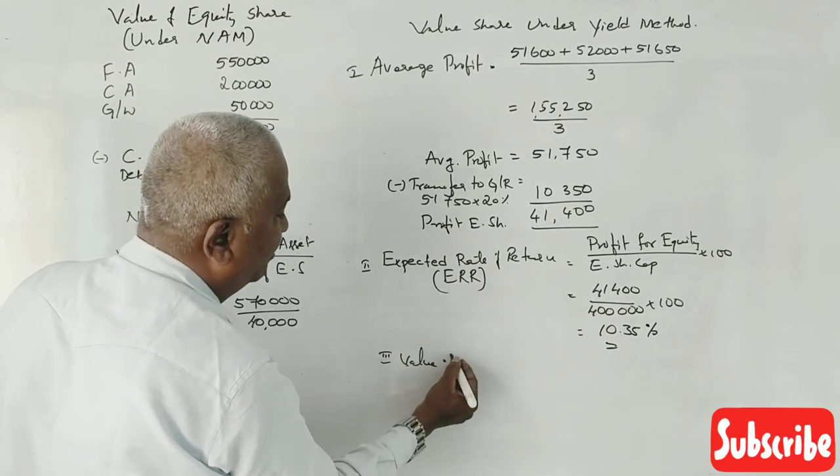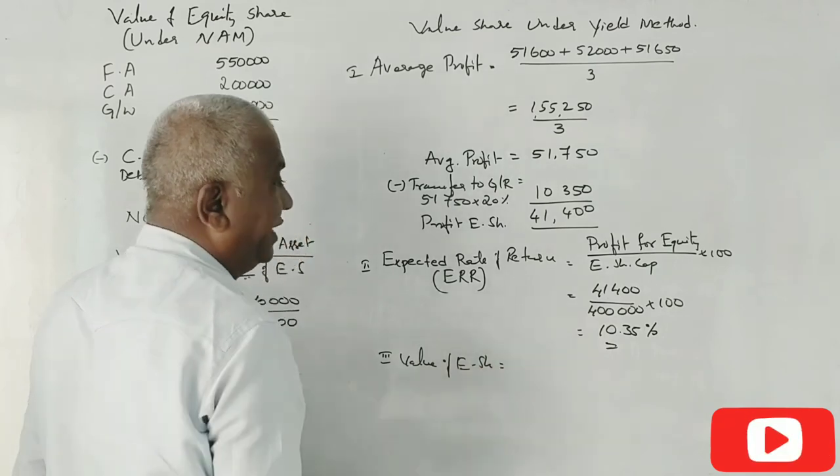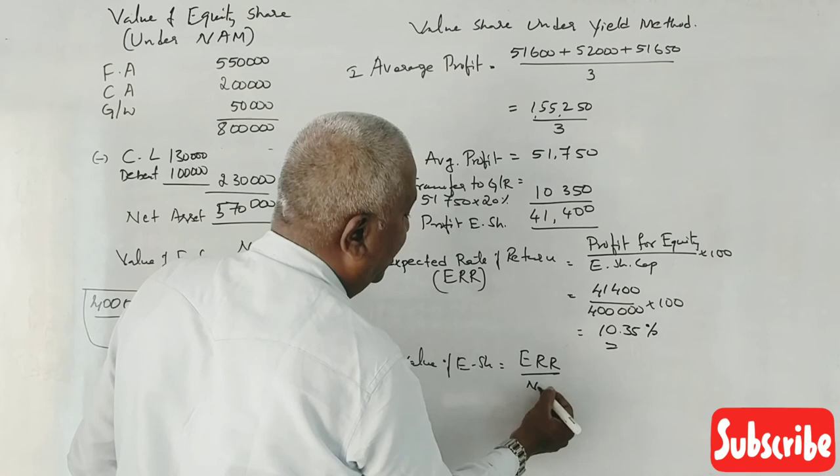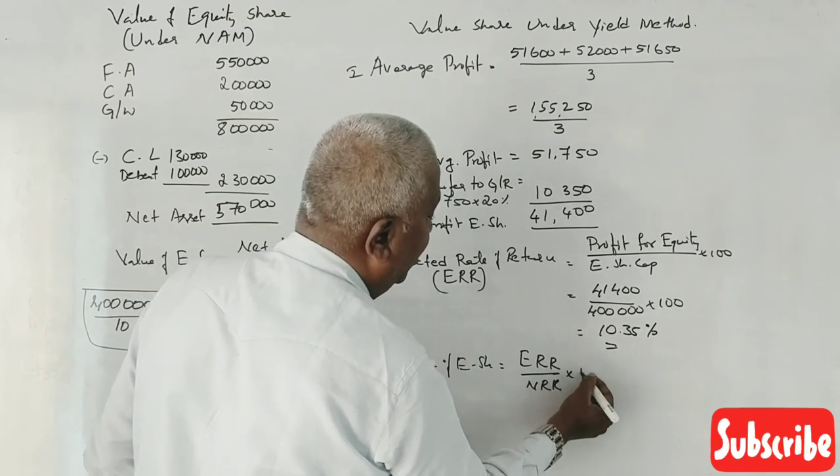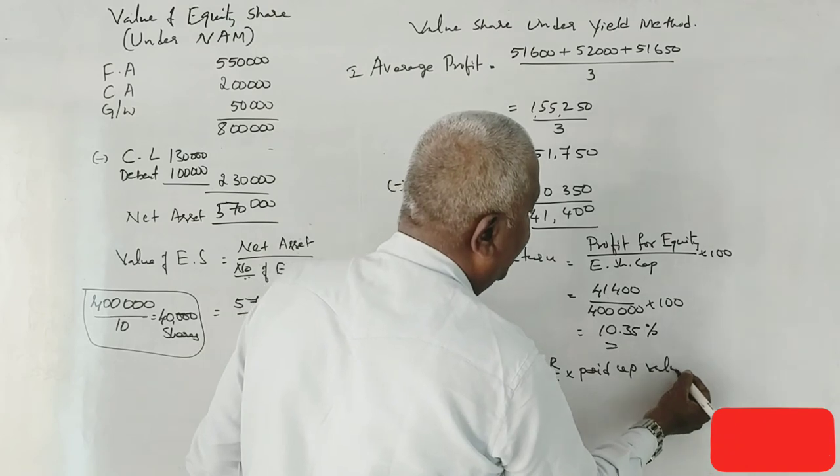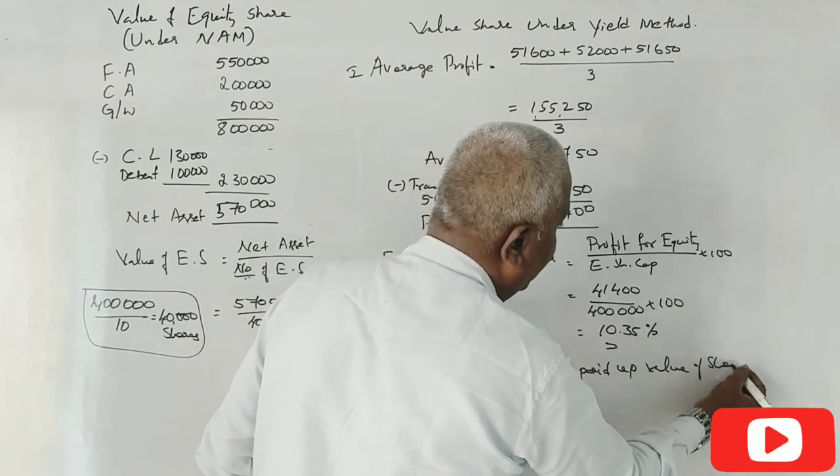Last step, value of equity share. ERR divided by NRR into paid up value of share.